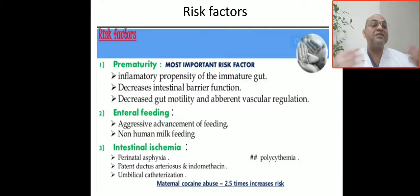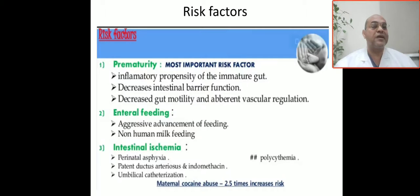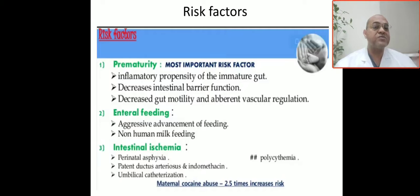Polycythemia and umbilical venous catheter can also impair gut perfusion, leading to ischemic gut. The bacteria then invade, leading to necrotizing enterocolitis and intestinal perforation. If the mother is receiving cocaine, there is a 2.5 times increased risk for gut perforation and necrotizing enterocolitis.